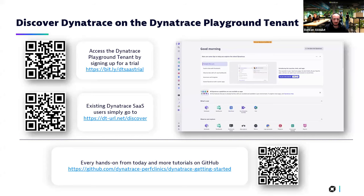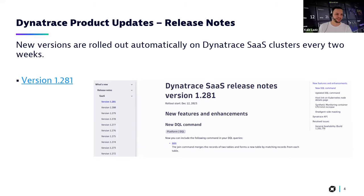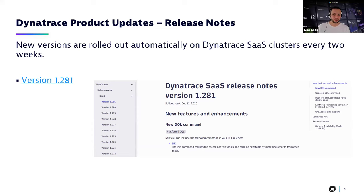Let's move on to the next slide. Let's get back to you, Kale. Let's talk about the release notes for 281. New versions are deployed automatically to Dynatrace SaaS clusters every two weeks, and in this session today we'll focus on 281. Let us jump right into the new changes.